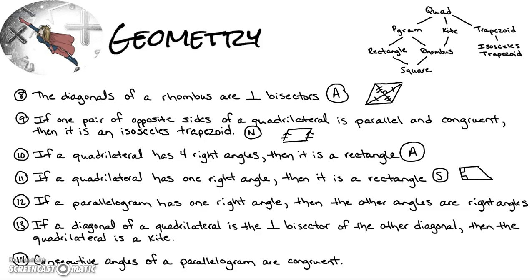Number twelve: if a parallelogram has one right angle, then the other angles are right angles. That is always true. Since it's a parallelogram, opposite angles are equal — so the opposite angle is also 90. Consecutive angles must be supplementary, which forces both adjacent corners to be 90 as well. This also means a parallelogram with one right angle is always a rectangle.